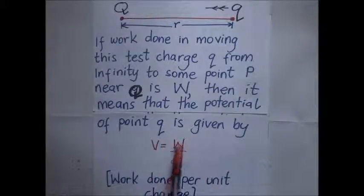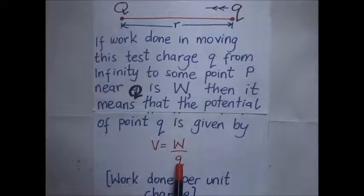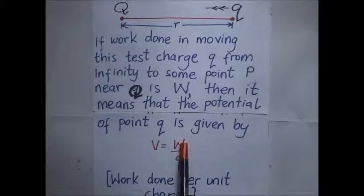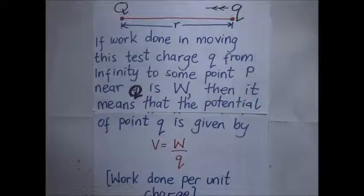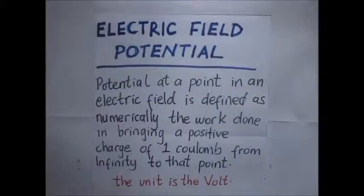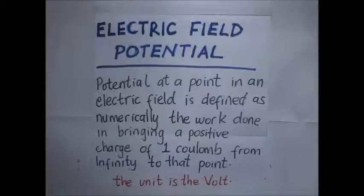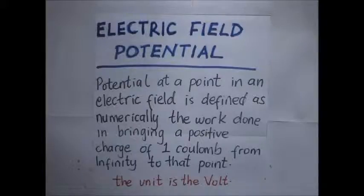The SI unit for potential comes from the formula: work done per unit charge. Work is measured in joules and charge q is in coulombs, so the SI unit is joules per coulomb, which is equivalent to one volt. Therefore, the electric potential at a point in an electric field is defined as the work done in bringing a positive charge of one coulomb from infinity to that point.